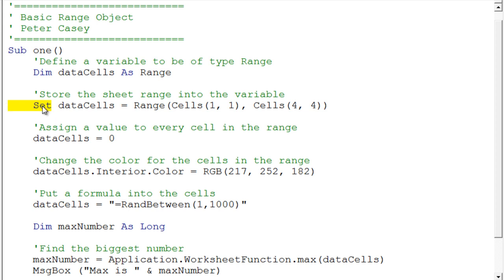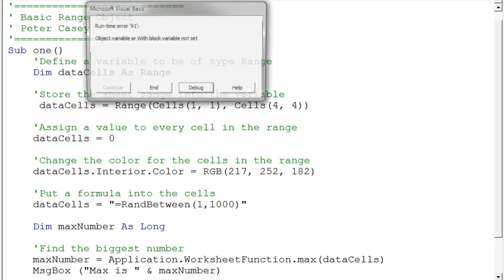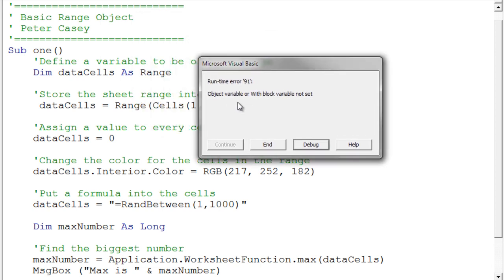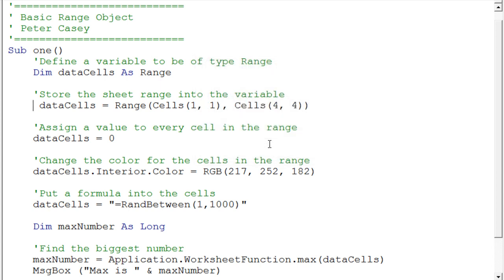In fact why don't I just go ahead and I'll delete the set keyword here. And we'll just run this and see what happens. So I'll just go ahead and hit run. And immediately it comes down and I get this error message that says object variable or width block not set. In other words I actually remove the set keyword and Visual Basic tells me you can't do that. So I'll just hit the end button here.